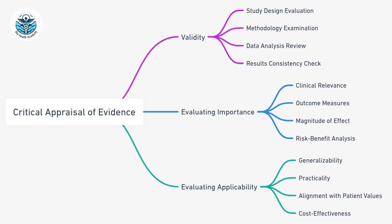It involves a systematic evaluation of research evidence to assess its validity, importance, and applicability. The mind map you see on the screen breaks down the process of critical appraisal into three key components: validity, importance, and applicability — evaluating all three of them.